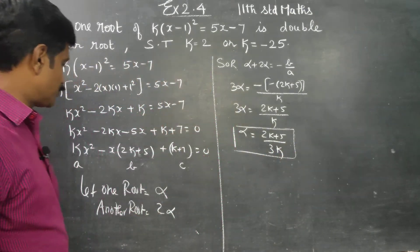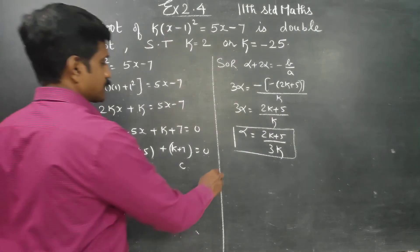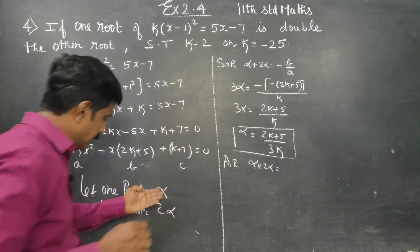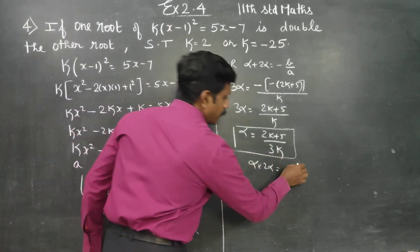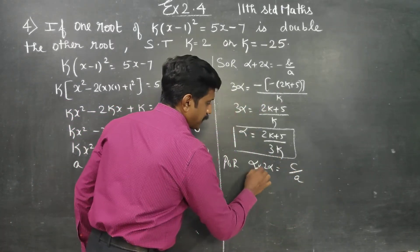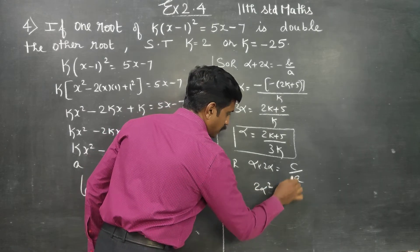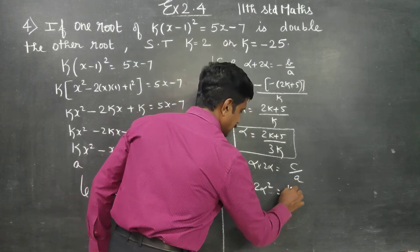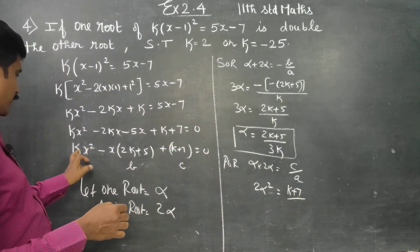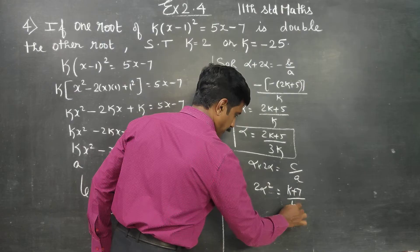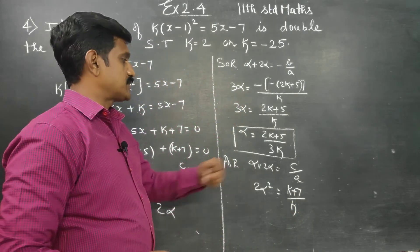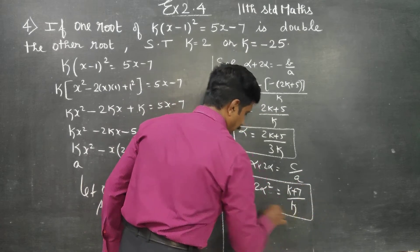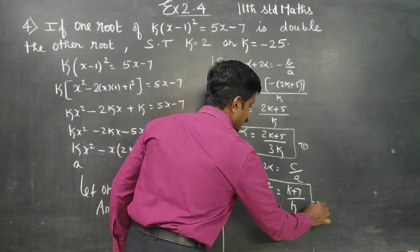Then coming back to the product of the roots. Product of the roots: alpha into 2 alpha. The formula is c by a, so 2 alpha square is equal to c by a. c would be k plus 7, and a is the x square coefficient k. So 2 alpha square equals k plus 7 by k. Already alpha is known; I will substitute. This is equation 1 and equation 2.